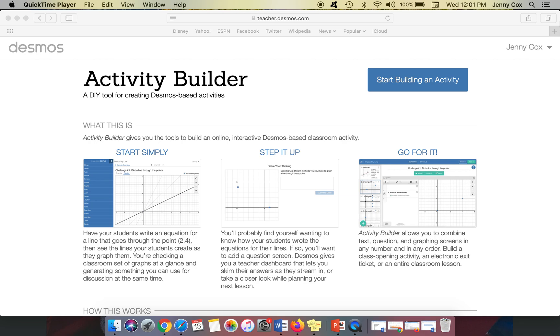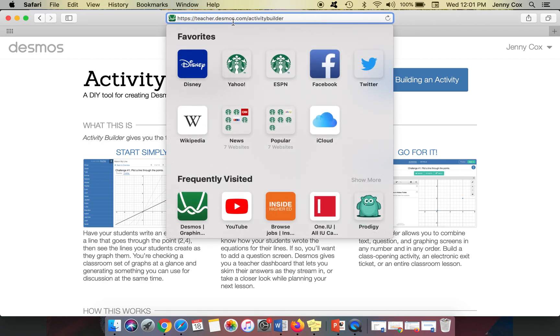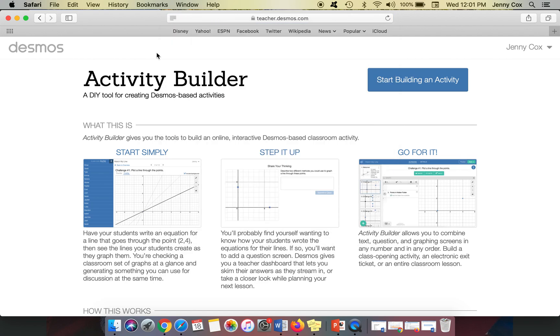So first you're going to go to teacher.desmos.com/activitybuilder. And you are going to click on start building an activity. You can also google activity builder Desmos and it will come up.